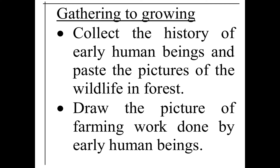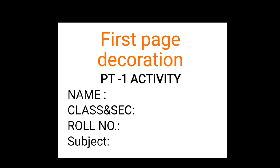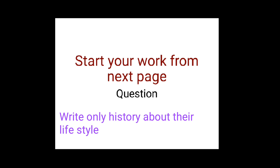Students, how you are going to start your activity: you will take the first page as a decoration page, where you are going to mention all the details — PT1 activity — where you will write your name, class and section, roll number, and subject. You can decorate this page with colorful sketch pens or colorful pens. This will be the first page of your activity.